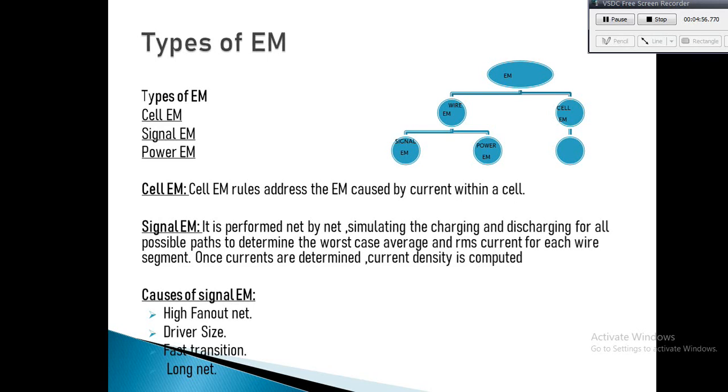Signal EM is excessive current density within an interconnect which, if not effectively mitigated, causes electromigration. Signal EM is the gradual displacement of metal atoms in a semiconductor. It occurs when the current density through the conductor is very high and causes the drift of metal ions.